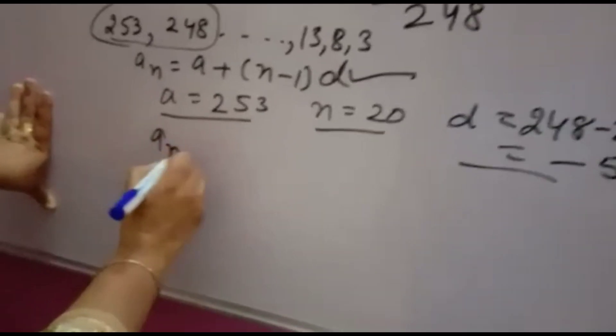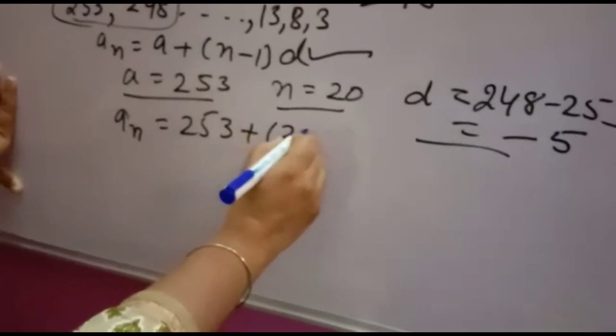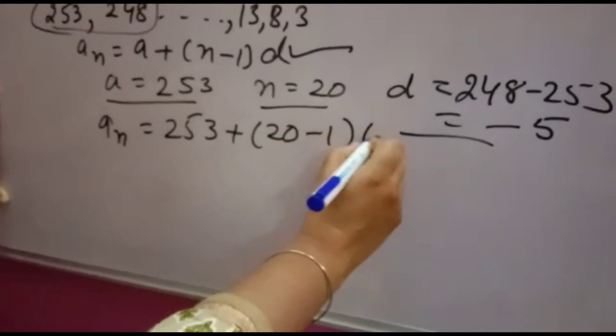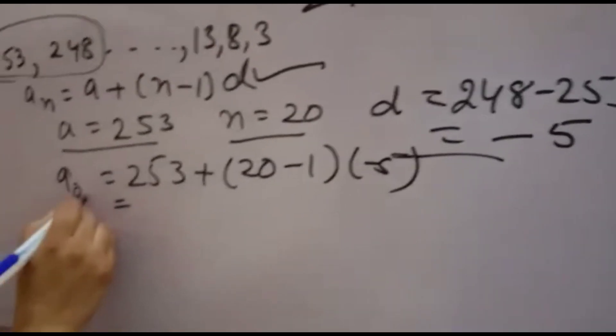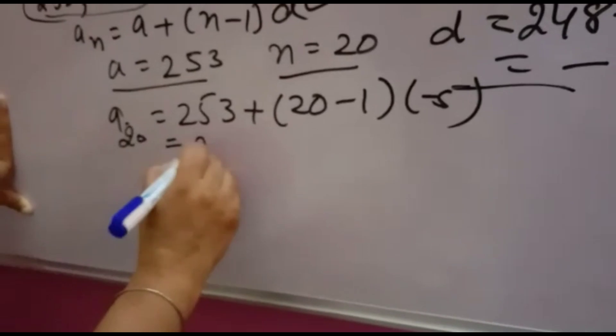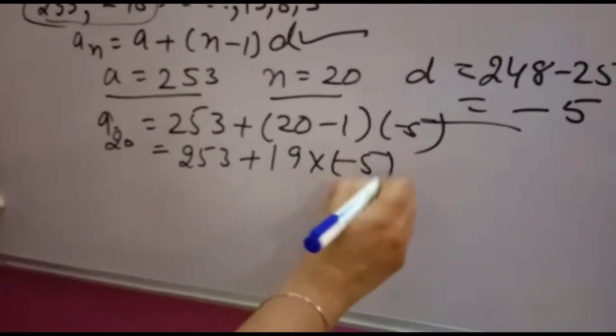AN will be A is 253 plus N is 20 minus 1 into minus 5. So A20 will be 253 plus 20 minus 1 is 19 into minus 5.